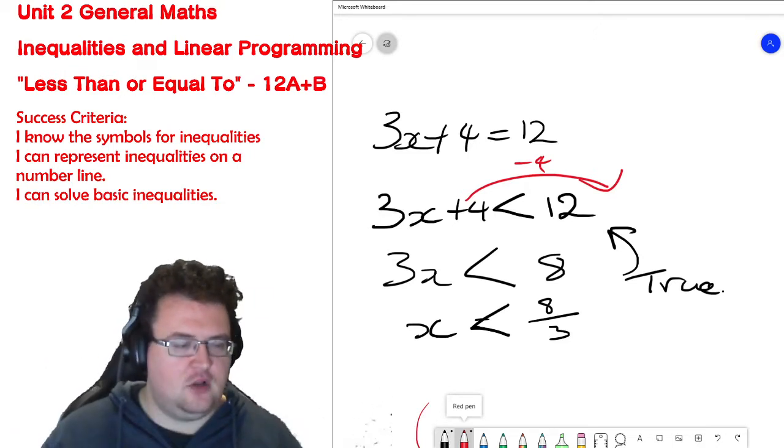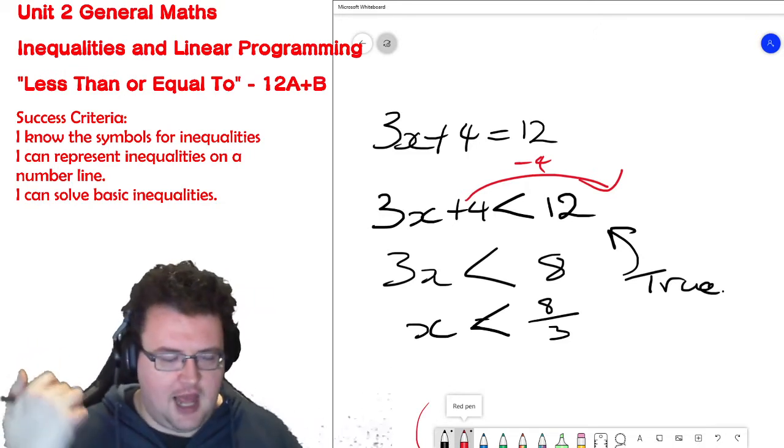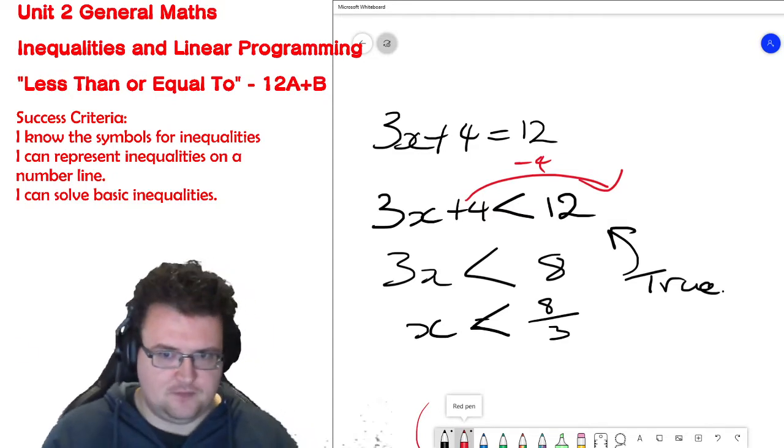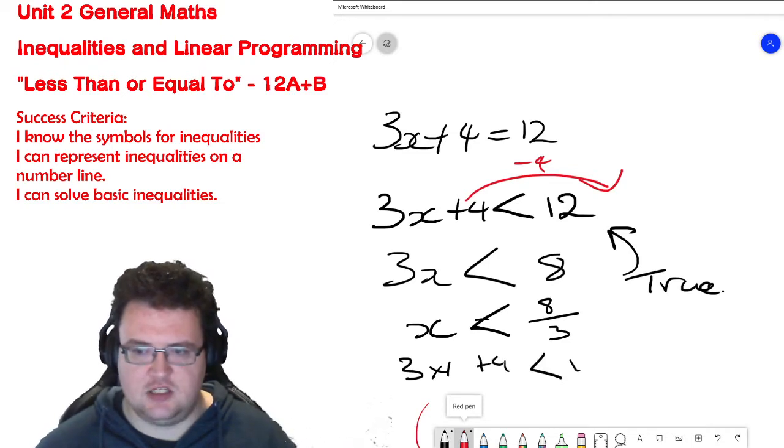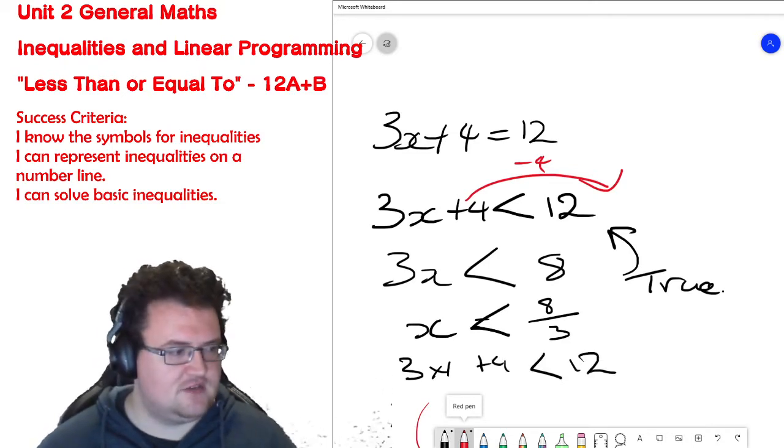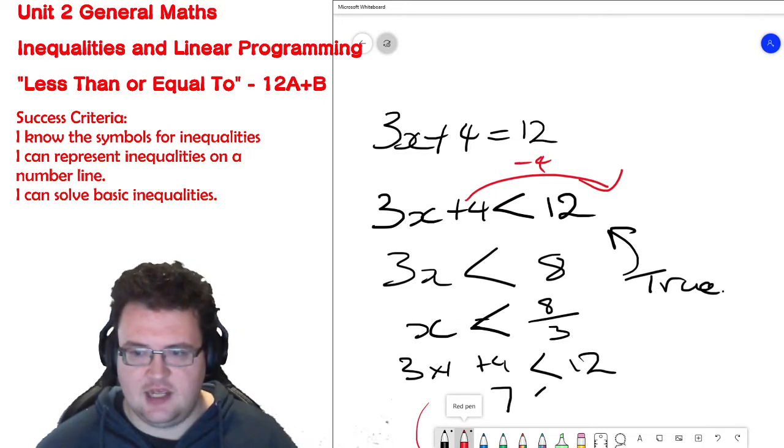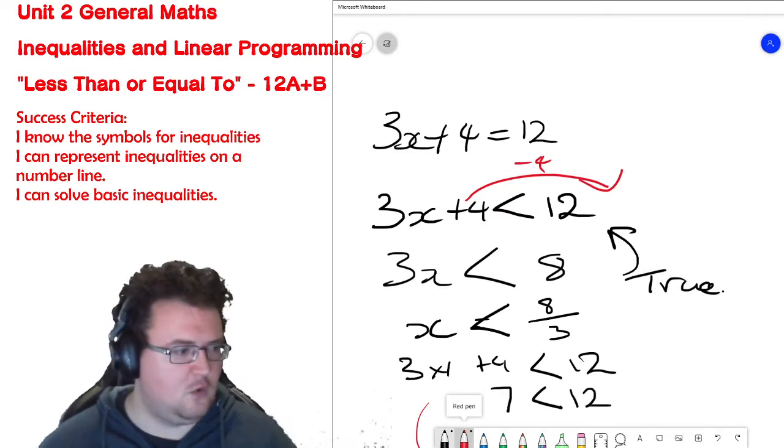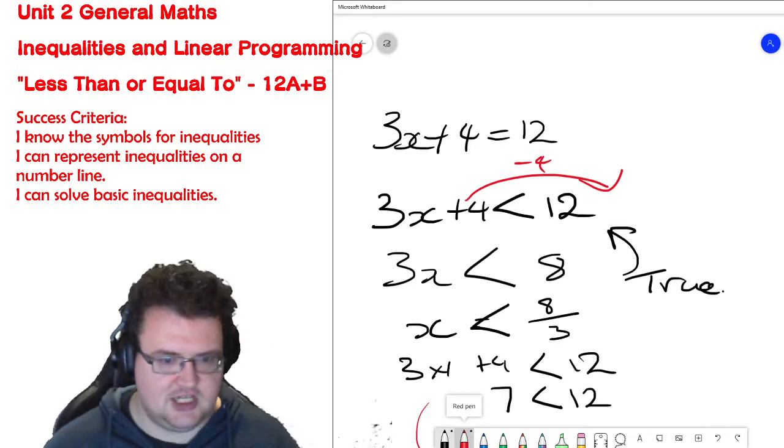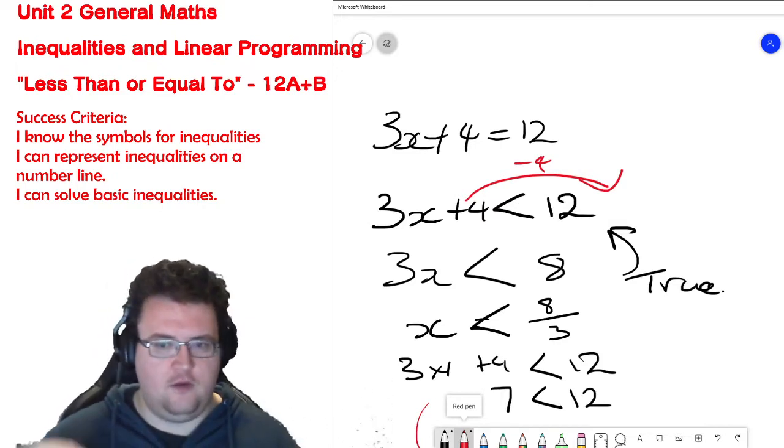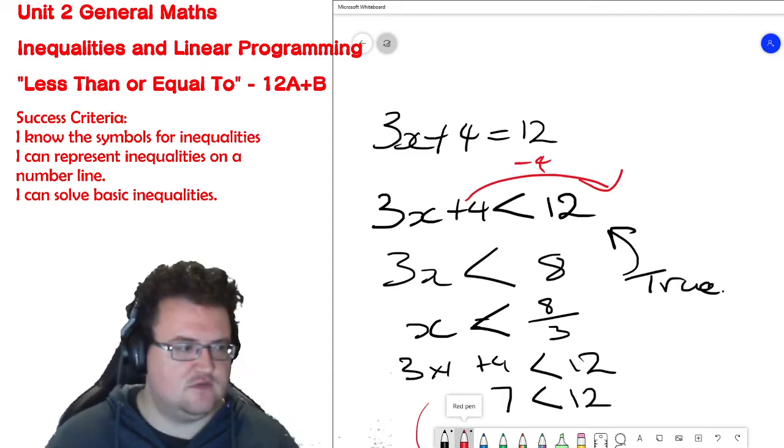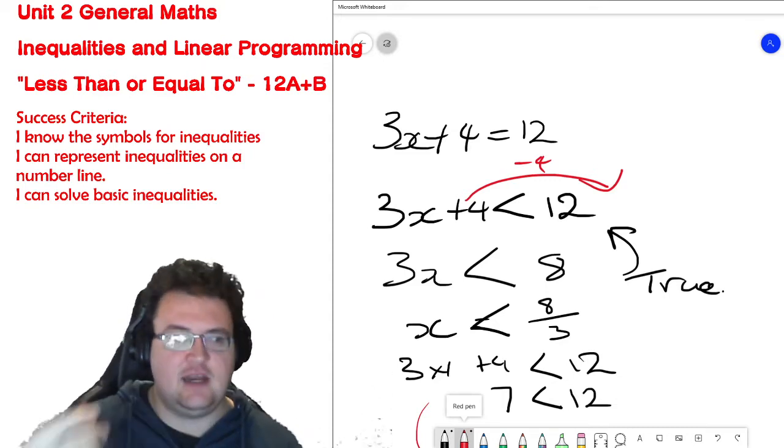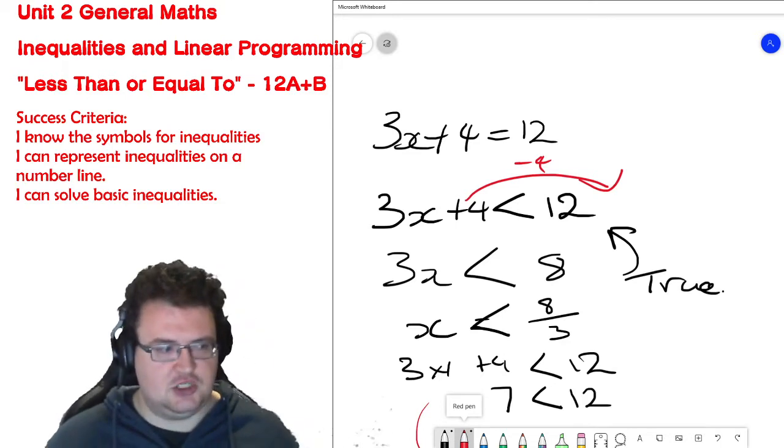For example, if I say x equals 1 and I put it into that equation, 3 times 1 plus 4 is less than 12. 3 times 1 is 3 plus 4 is 7. Is 7 less than 12? Yes it is. If I put 2 in there instead, 3 times 2 is 6 plus 4 is 10. Is 10 less than 12? Yes, that is true.